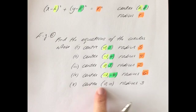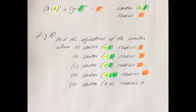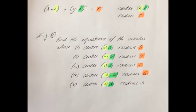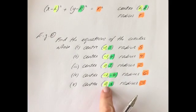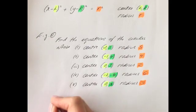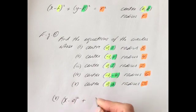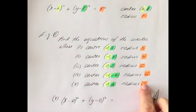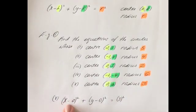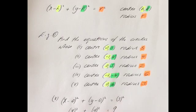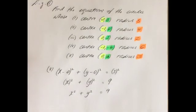Finally, find the equation of the circle whose center is (0, 0) and radius 3. Here h = 0, k = 0 — this is when the center is the origin. Substituting: (x − 0)² + (y − 0)² = 3². Tidying up: x squared plus y squared equals 9. When the center is the origin, the equation simplifies neatly to x² + y² = r².